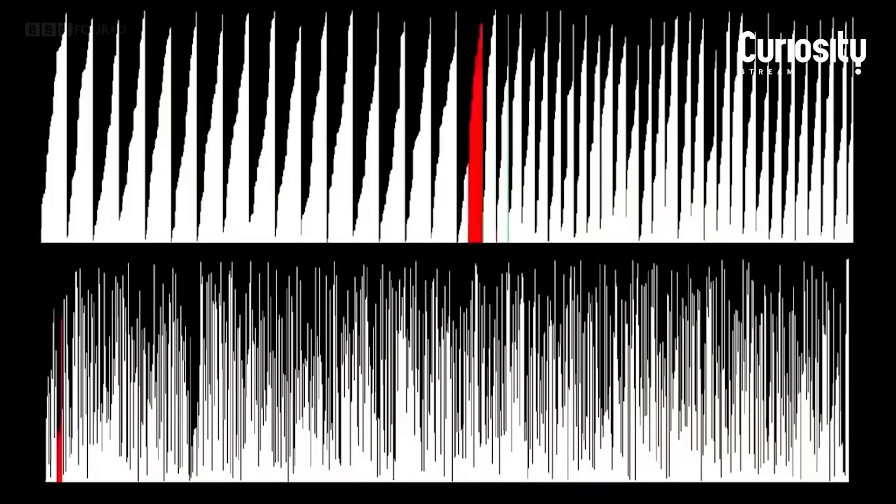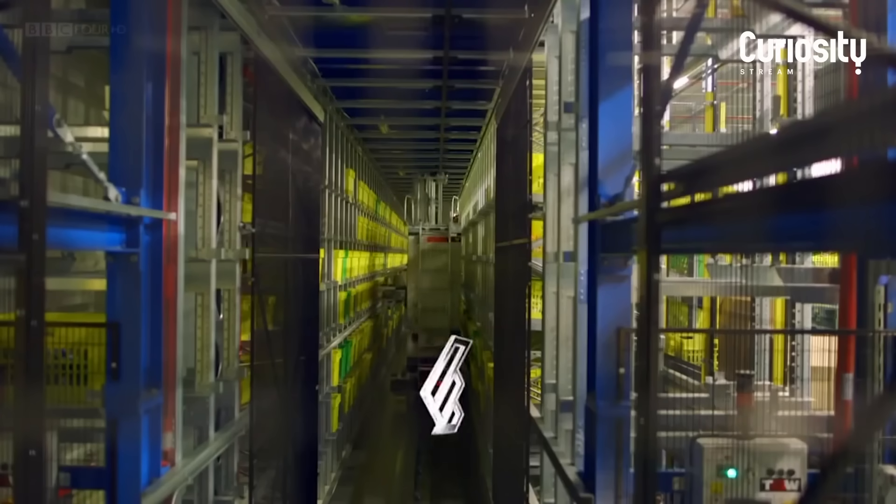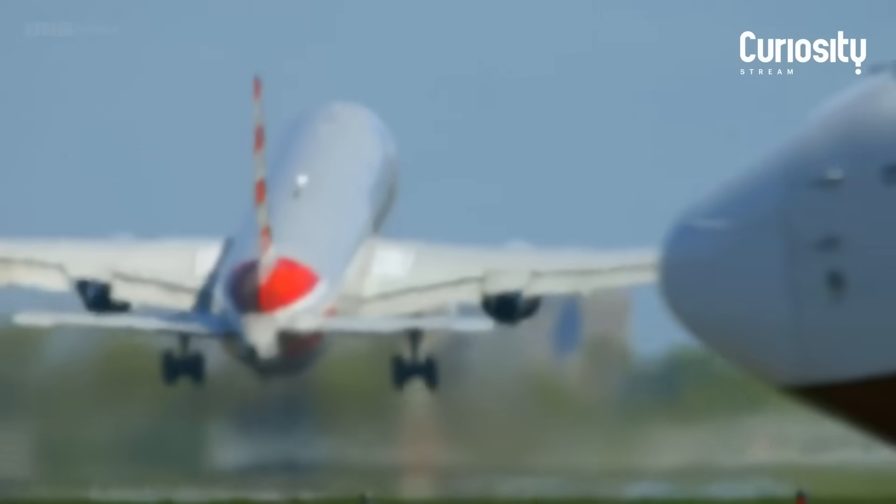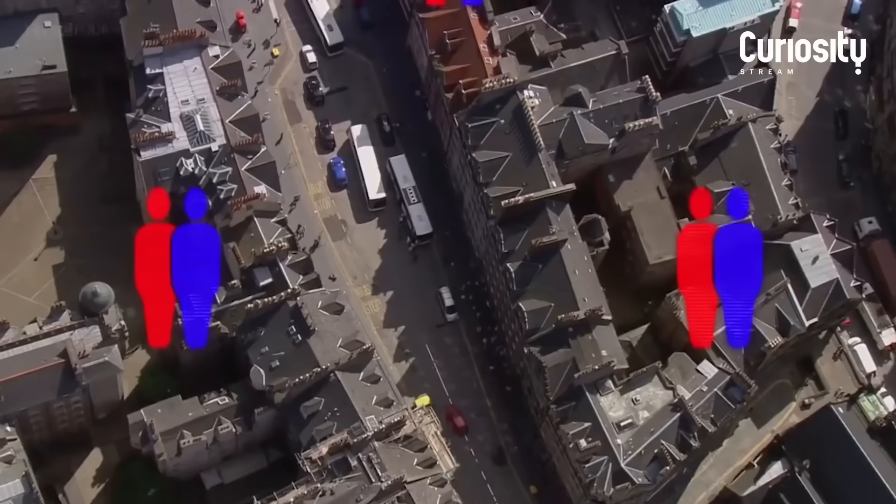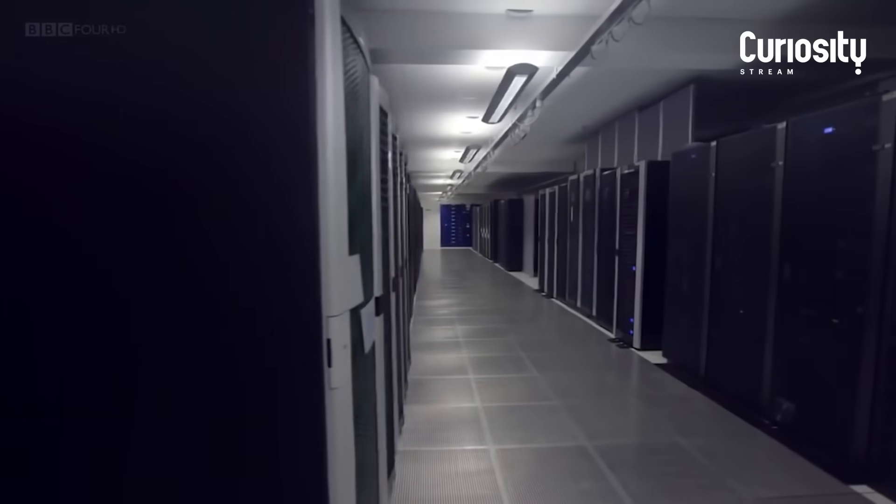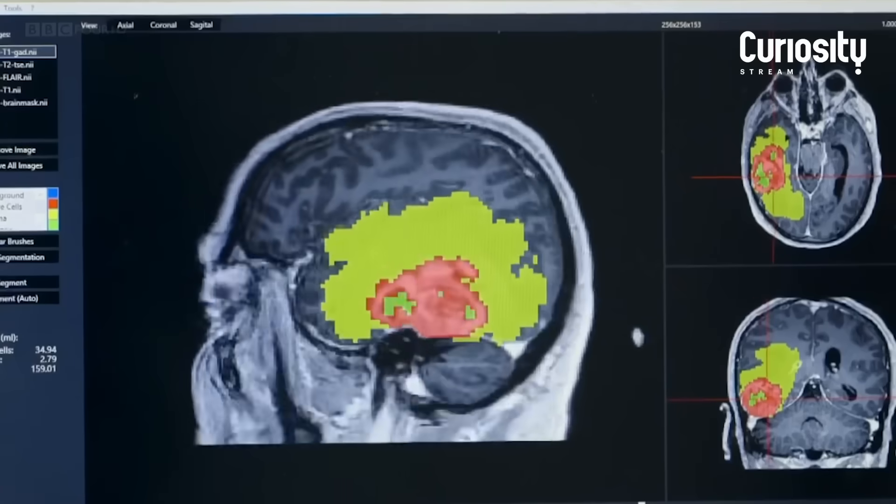There's a great documentary on CuriosityStream called The Secret Rules of Modern Living, which explores how these algorithms work. From how TV streaming services choose which shows to recommend to you, to matching profiles on dating websites, to saving lives with the best kidney transplant solution. I was surprised at just how simple and clever some of these algorithms are, but also at how effective they are in helping us make the best decisions.